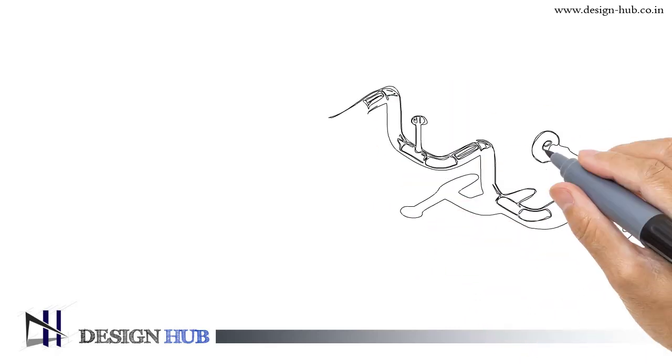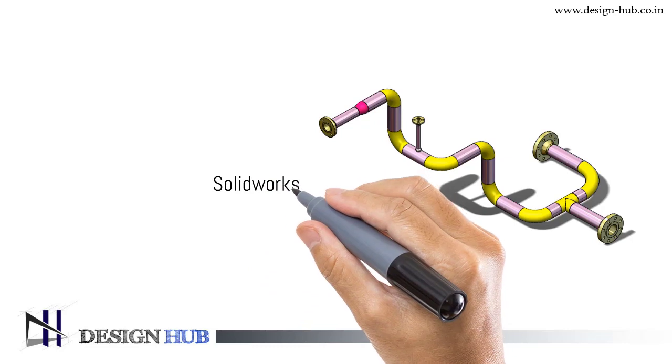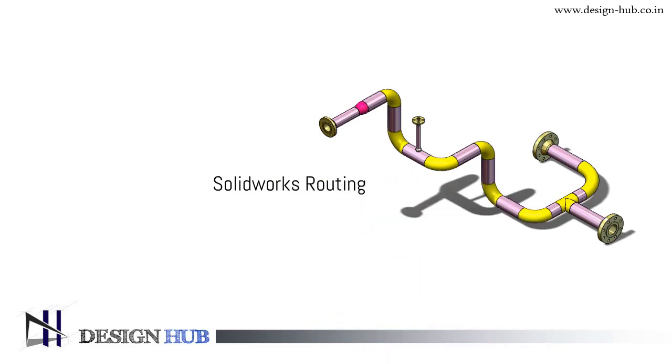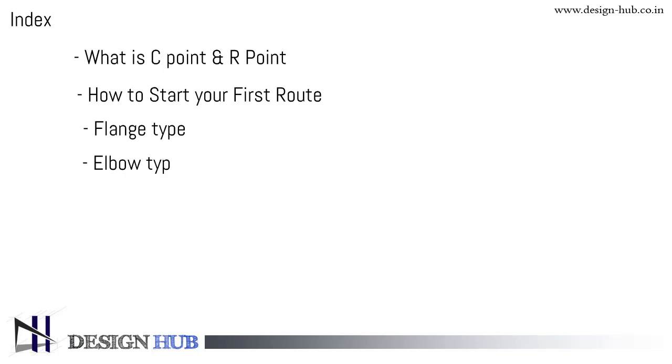Welcome to Design Hub. This video is about piping design using SOLIDWORKS. First, we will study what is C point and R point in SOLIDWORKS routing and its uses. Then we will discuss the following points like flange type and elbow type.